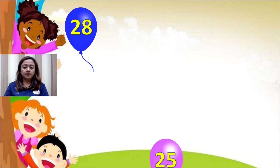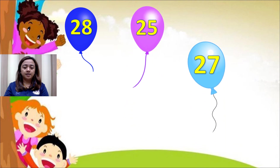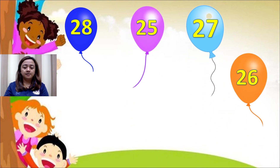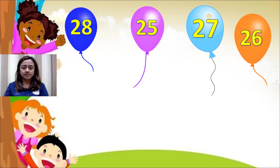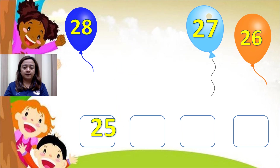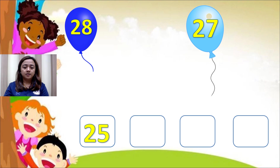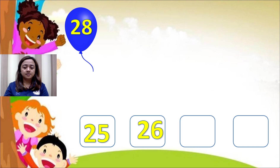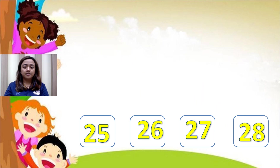Next example: 28, 25, 27, and 26. Again, ascending order is smallest to largest, so we arrange them as 25, 26, 27, and 28.